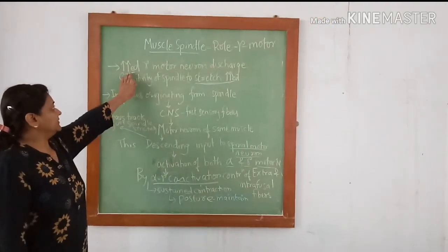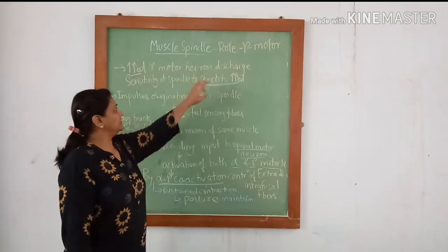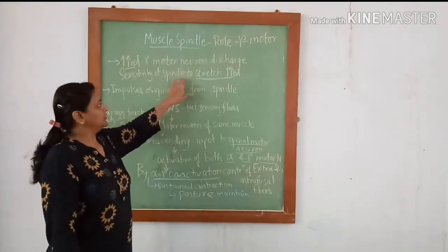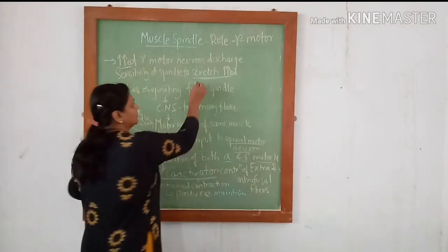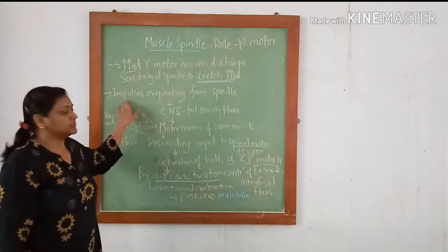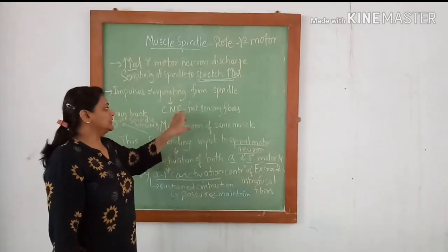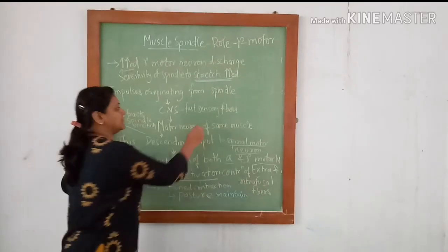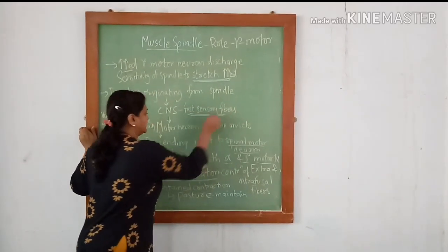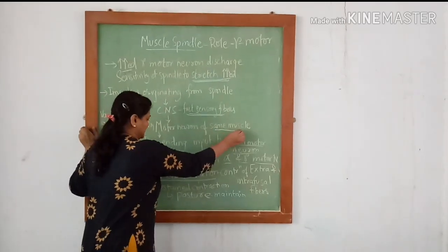Whenever there is an increased gamma motor neuron discharge, the sensitivity of the spindle to stretch is also increased. The impulses which are originated from the spindle go to the CNS by fast sensory fibers and come back to the motor neuron of the same muscle.